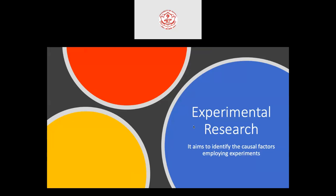The next is experimental research, which aims to identify causal factors by employing experiments. The researcher conducts many experiments, and through them, can identify the causal factors — the factors which lead to a particular situation. That is the outcome of experimental research.